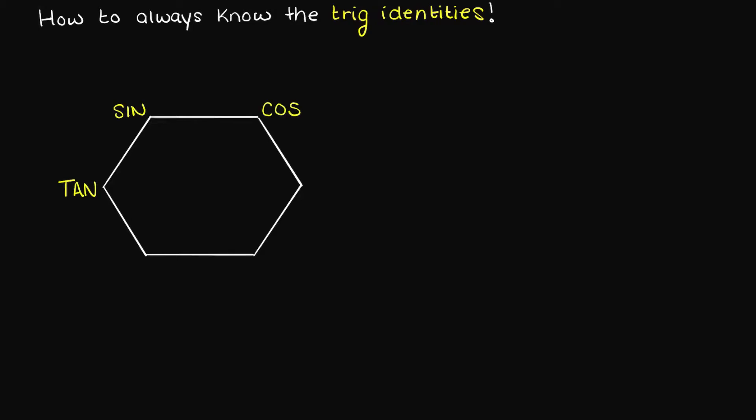What about the other three points? Well, across from each of the three trig functions let's write cotangent across from tangent and cosecant across from sine. Lastly, the one trig function left is secant. Now let's draw a big number one in the middle, and that's it — if you can draw this hexagon you can quickly recall all the trig identities without memorizing them.